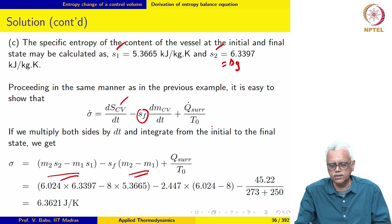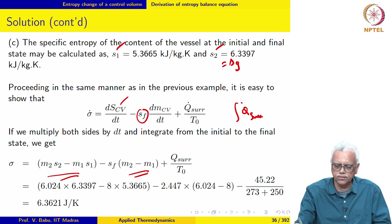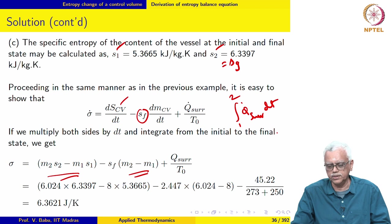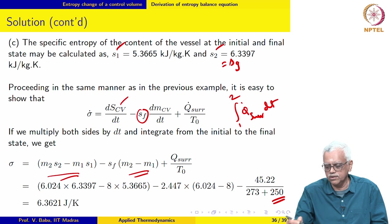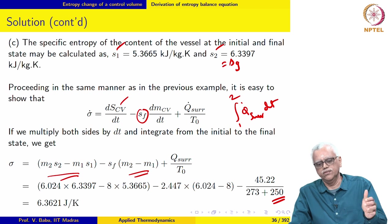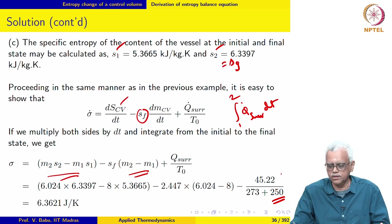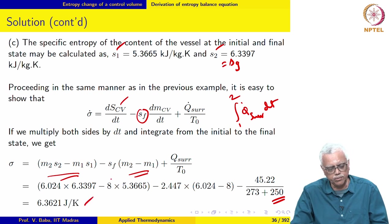We add the Q dot surroundings term. The surroundings supply heat, so Q is negative for the surroundings; the reservoir is at 250 degree Celsius. Integrating gives the total heat supplied during the process. Plugging in all values, we get sigma equal to 6.3621 joules per Kelvin.